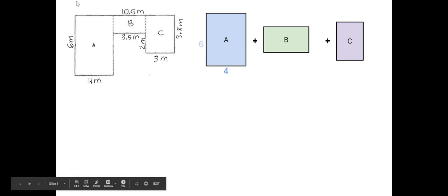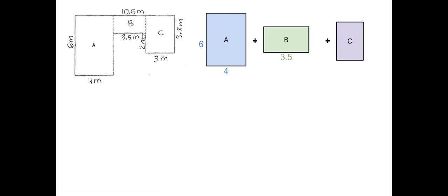It's four by six. B is 3.5, but how much is this right here? Is it obvious? Let's see if we can figure that out. I know that this whole length right here is 3.8, which means this is also 3.8. From here to here is 2, so 2 plus what is 3.8? If you just type in 3.8 minus 2, you will get 1.8. So that remaining part right here is 1.8, and I'm going to go ahead and label my drawing as 1.8.